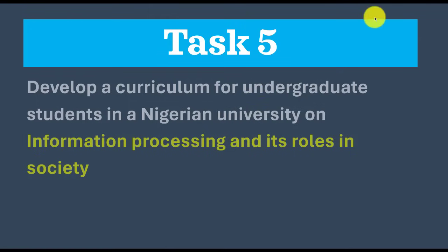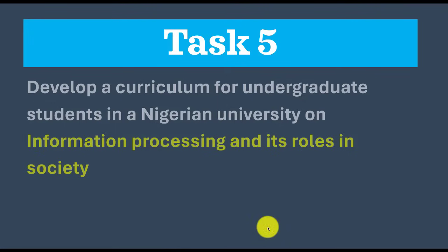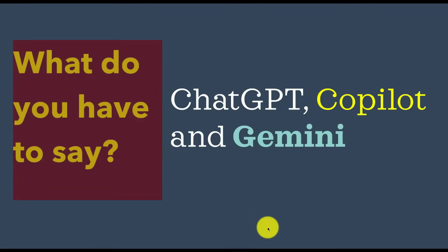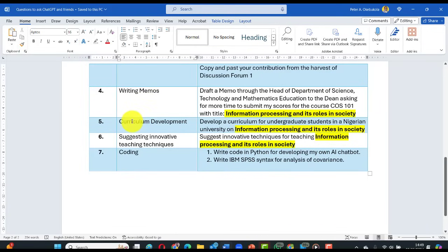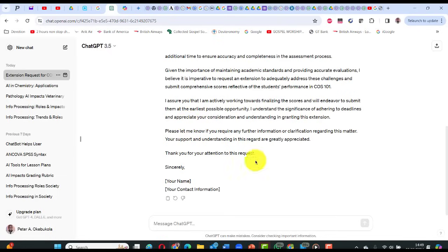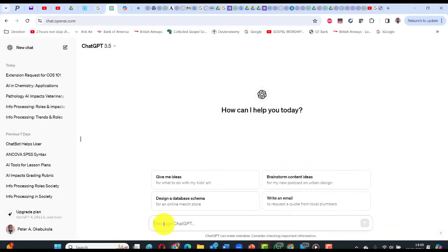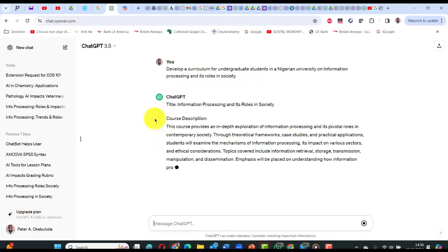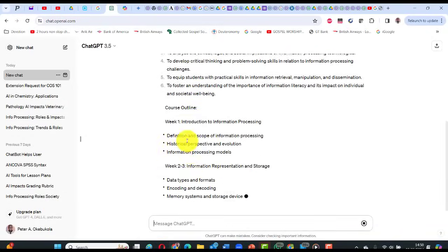Welcome back. Task five of seven: we want AI chatbots to help develop a curriculum for undergraduate students in a Nigerian university on information processing and its roles in society. Copy the prompt from the template. Go to ChatGPT, new chat, paste it, and see how ChatGPT responds. It gives course description, course objectives, course outline — the whole thing — assignments, teaching methodology, and references.